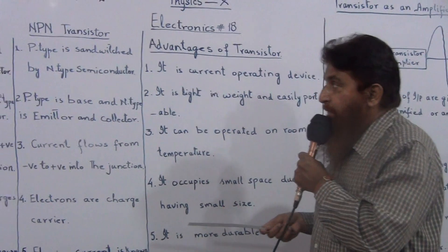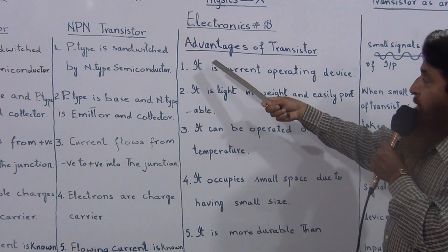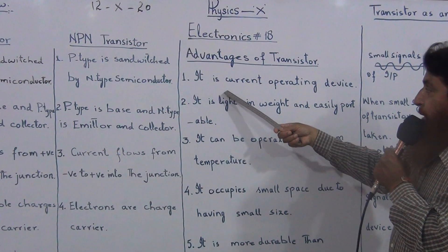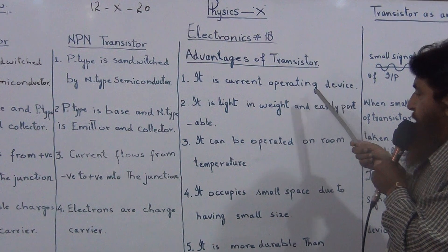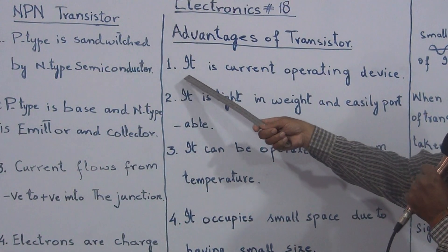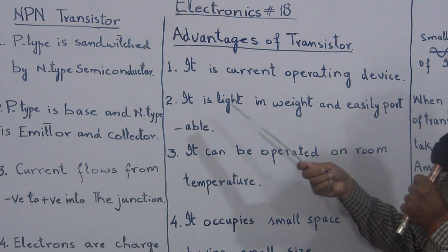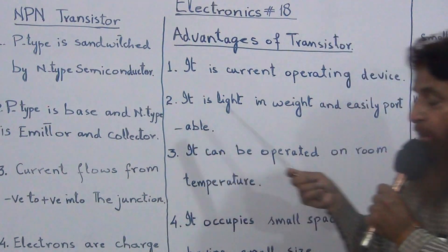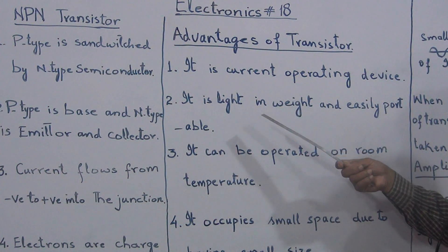Now, what are the advantages of these transistors? There are the following advantages. Number 1: It is a current-operated device. In old days, instead of transistors, there were triodes, which are voltage-operated devices.